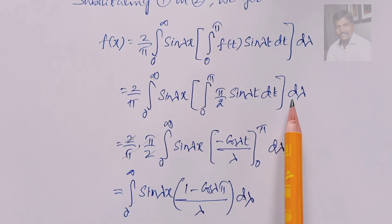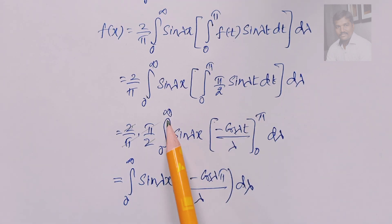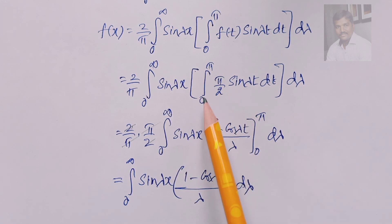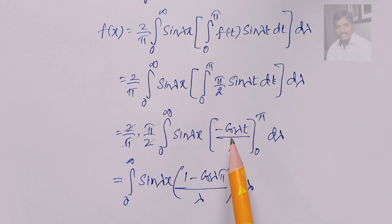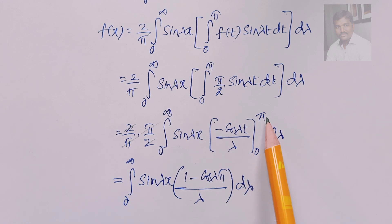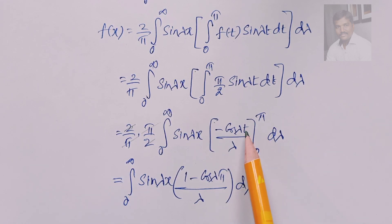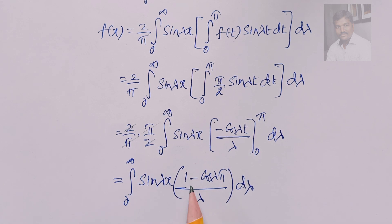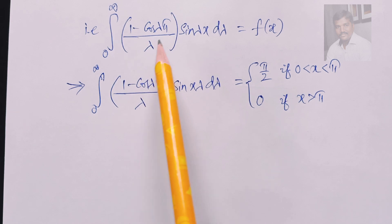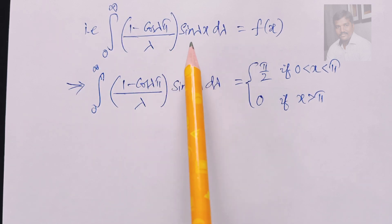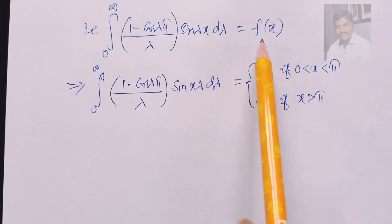We now evaluate the integral from 0 to π of sin(λt) dt, which equals [−cos(λt)/λ] from 0 to π, giving (1 − cos(λπ))/λ. Substituting back, we get the integral from 0 to infinity of sin(λx) times (1 − cos(λπ))/λ dλ, which equals f(x).